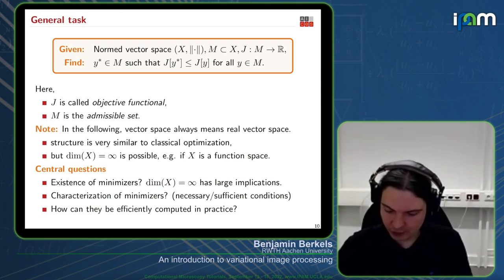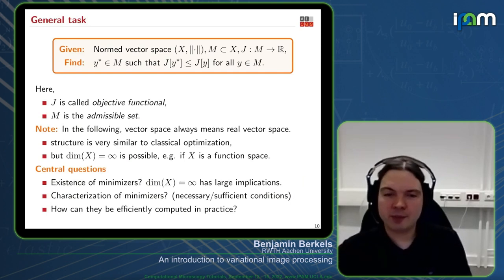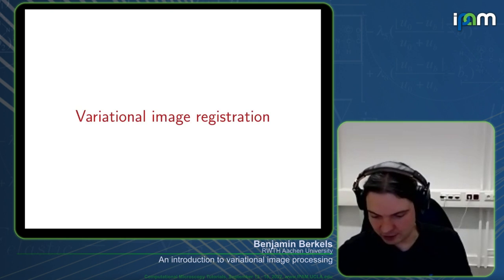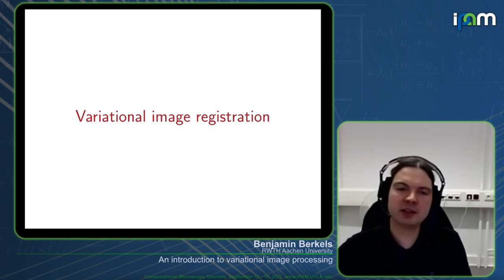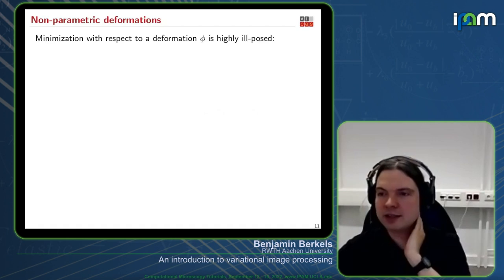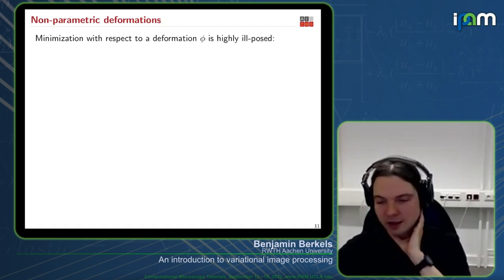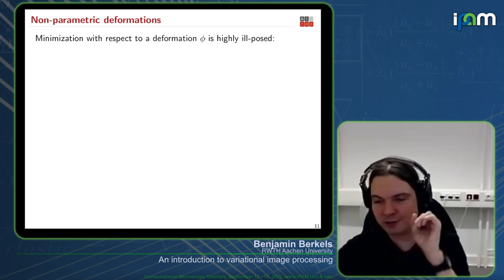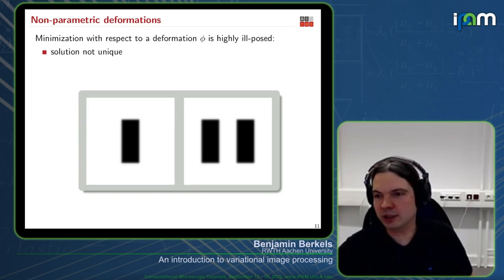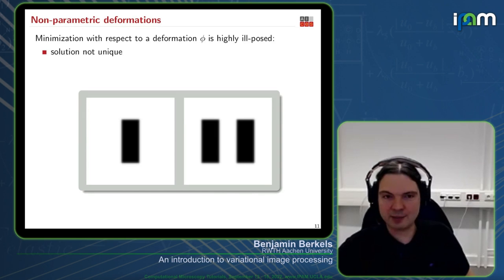Let's look at some ways to solve the registration problem in practice, to see general minimization concepts used there. This problem is actually quite ill-posed. Writing it down was easy — find φ such that one image composed with φ resembles the other — but there are many problems. For instance, the solution cannot be unique: if you have one rectangle to register to two rectangles, it could go here or there.